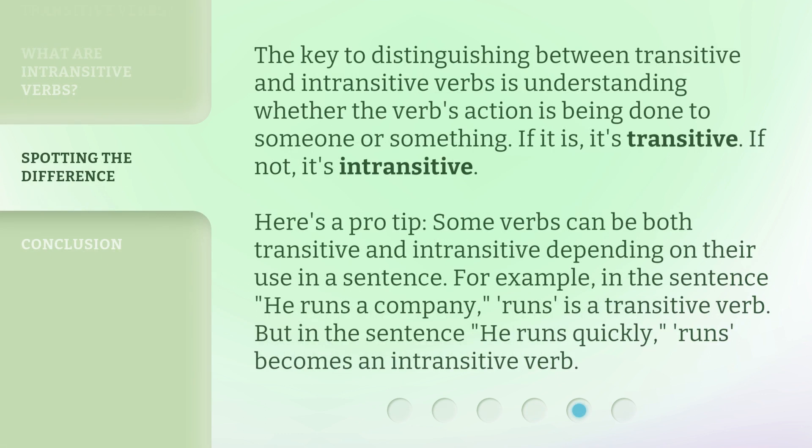The key to distinguishing between transitive and intransitive verbs is understanding whether the verb's action is being done to someone or something. If it is, it's transitive. If not, it's intransitive. Here's a pro tip: some verbs can be both transitive and intransitive depending on their use in a sentence. For example, in the sentence 'he runs a company', 'runs' is a transitive verb. But in the sentence 'he runs quickly', 'runs' becomes an intransitive verb.